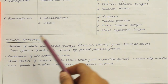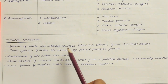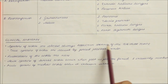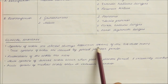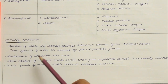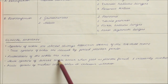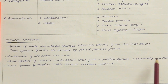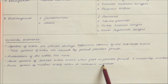Looking at the clinical anatomy of the ankle joint: sprains of the ankle are almost always abduction sprains of the subtalar joints. True sprains of the ankle are caused by forced plantar flexion. Dislocations of the ankle are rare. Acute sprains of the lateral ankle occur when the foot is plantarflexed and excessively inverted. Acute sprains of the medial ankle occur in excessive eversion.